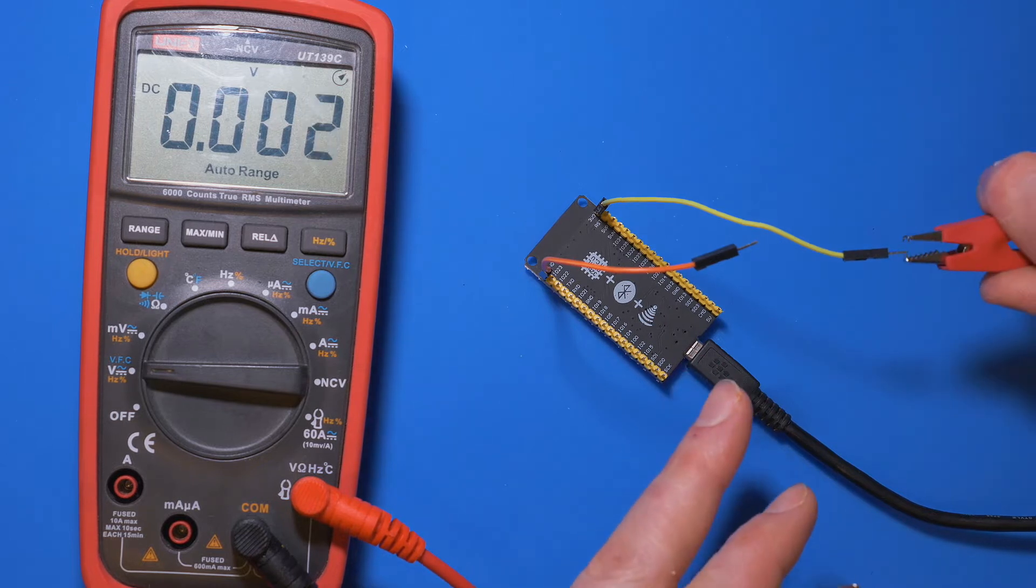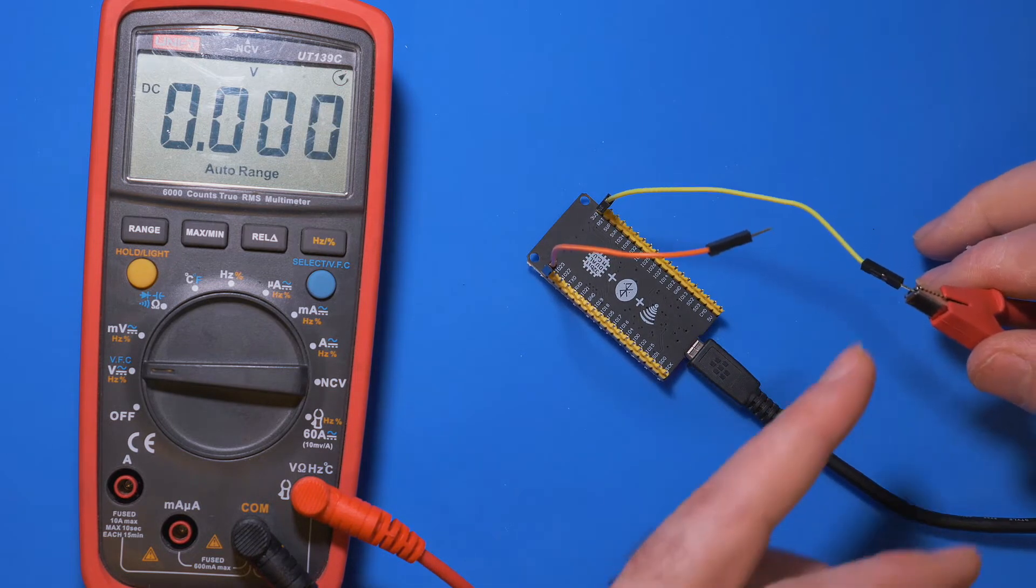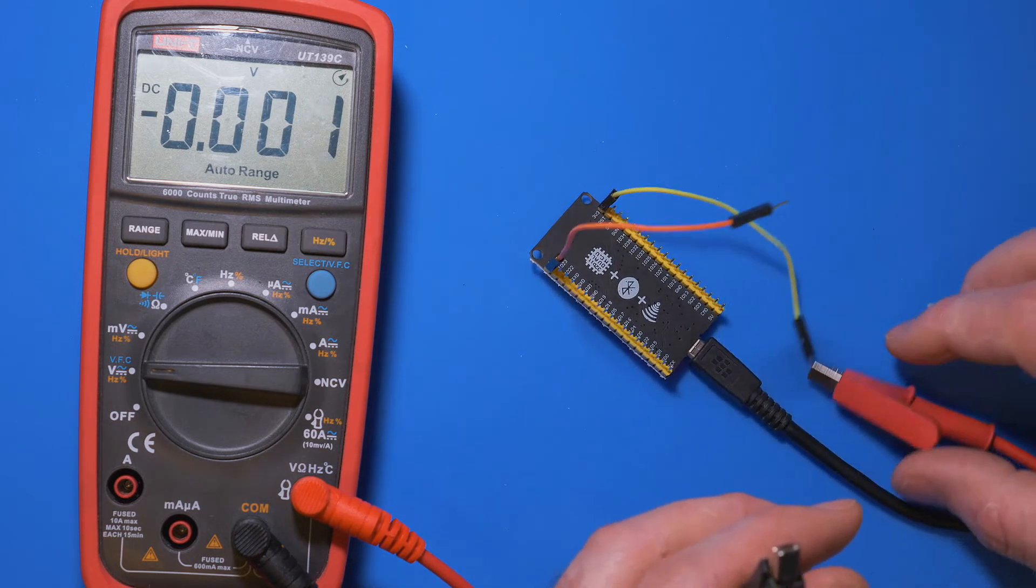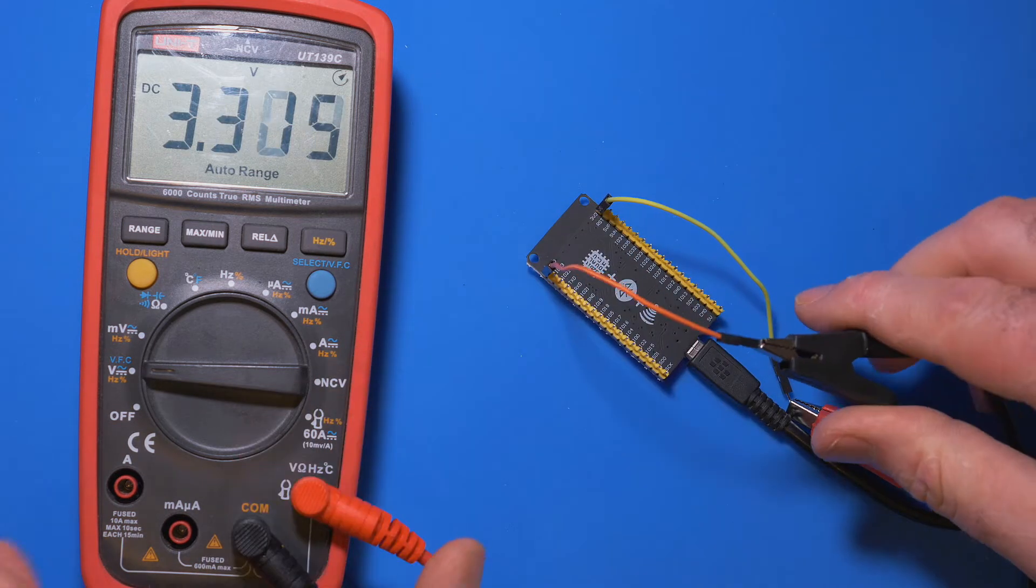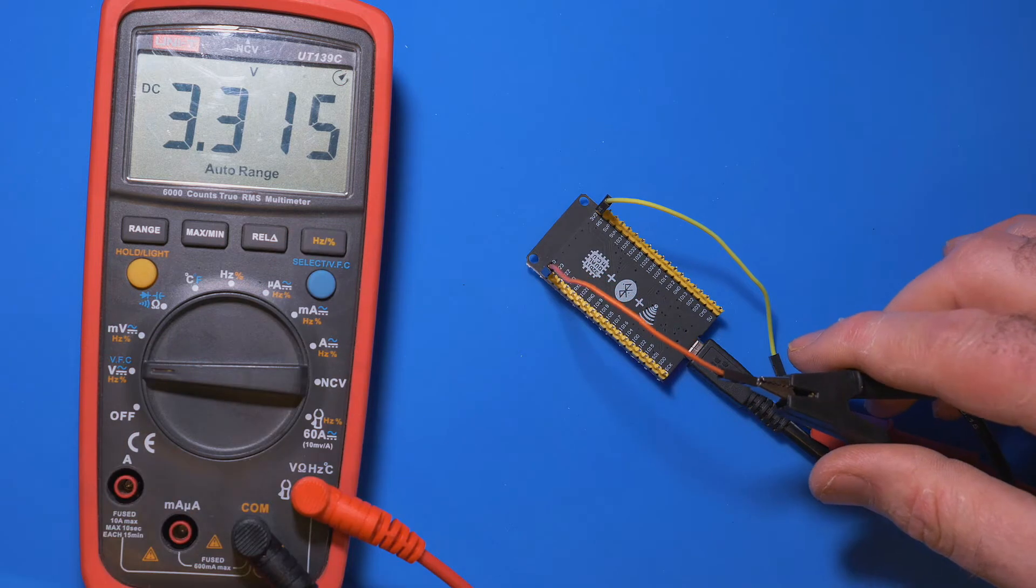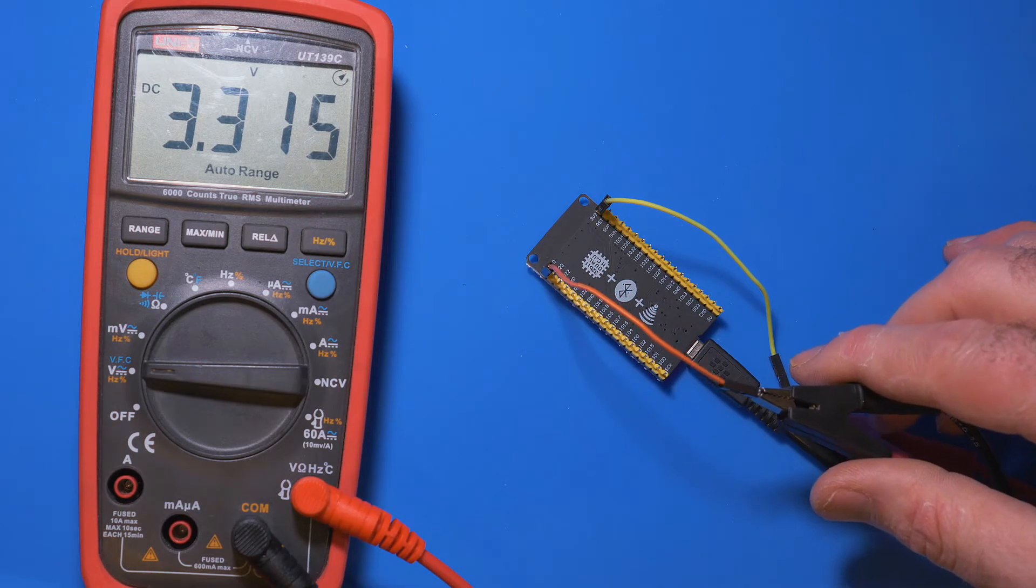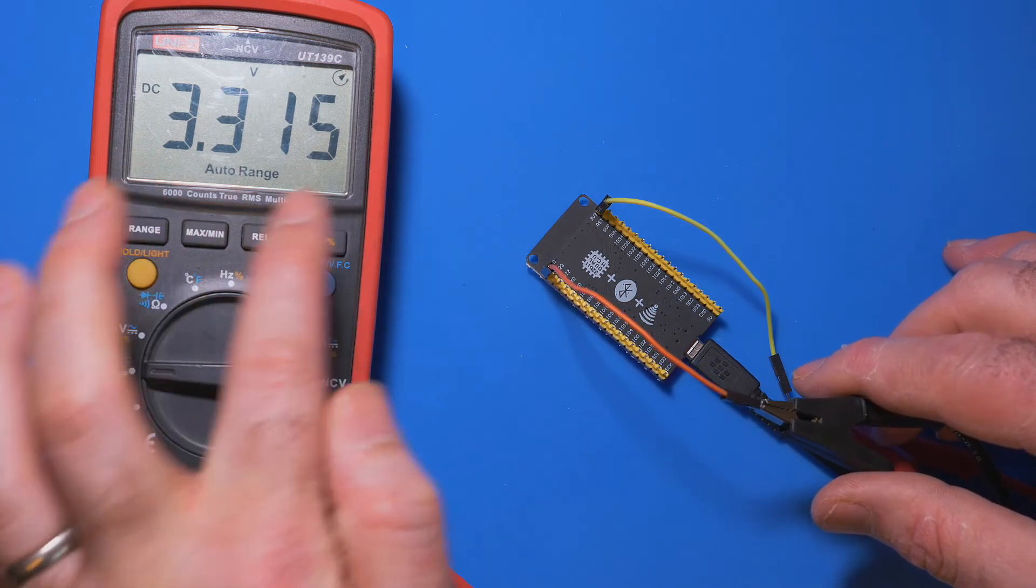The electricity needs to flow from somewhere to somewhere. So if I connect that onto ground, we can see that it's putting out 3.315 volts, which is perfectly fine. It's never going to be exact, but this is more than good enough for our purposes.